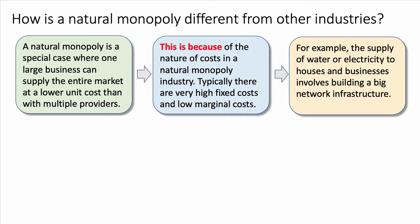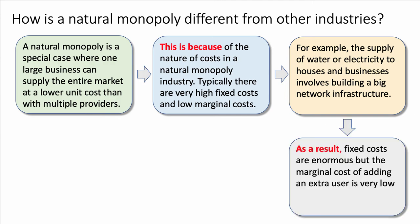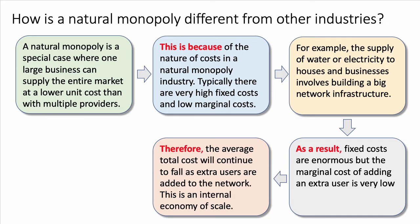For example, the supply of water, or the network providing electricity or gas to houses and businesses — these grid infrastructures involve building a big network infrastructure. As a result, fixed costs are huge, but the marginal cost of adding one extra user — a household or new business — to the grid is very low. Therefore, the average total cost will continue to fall as extra users are added to the network, and this is a good example of an internal economy of scale, sometimes called the network economy.